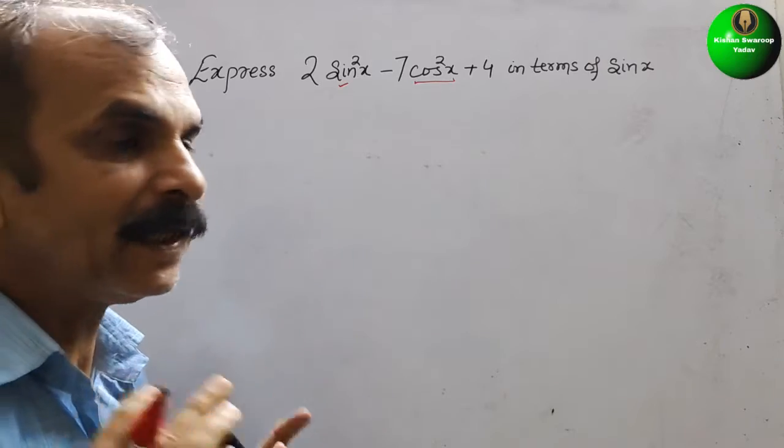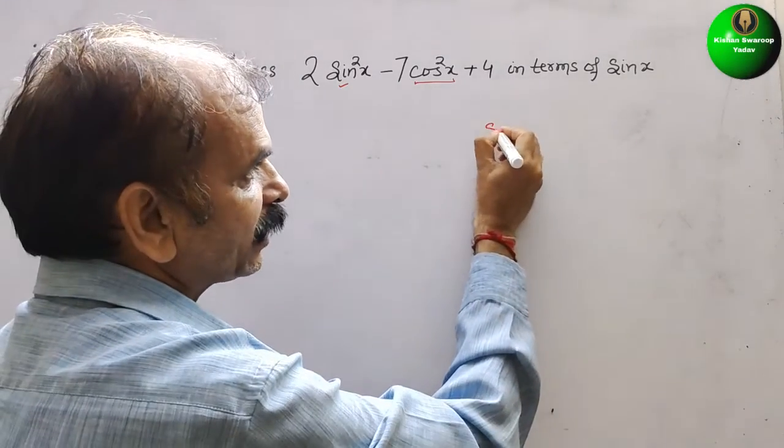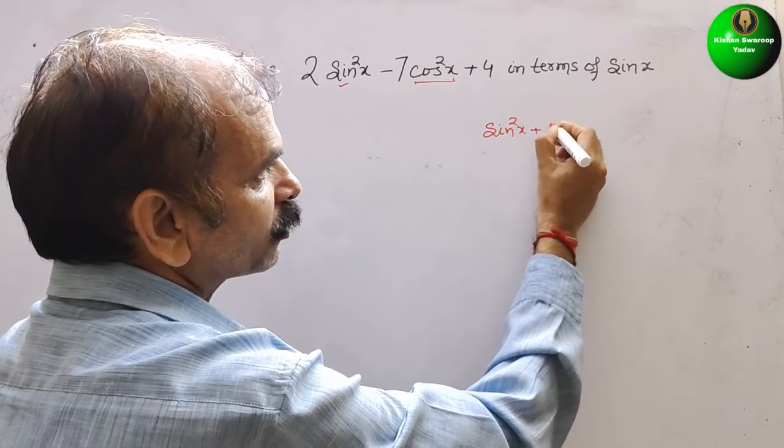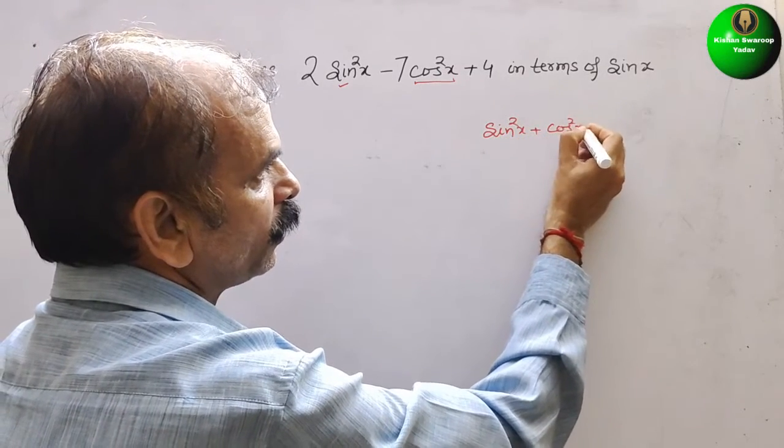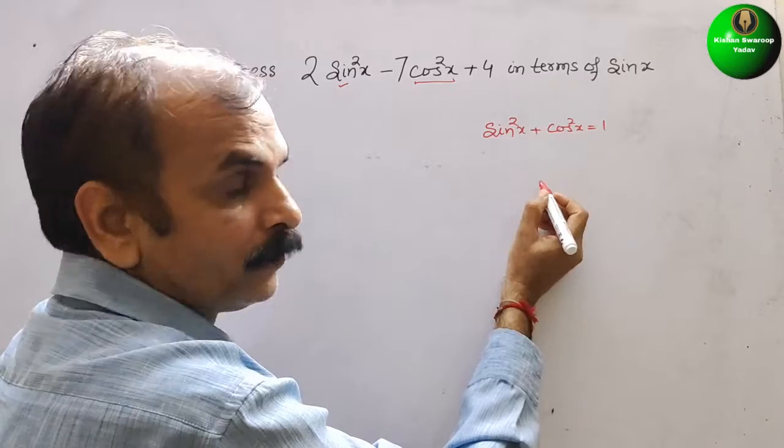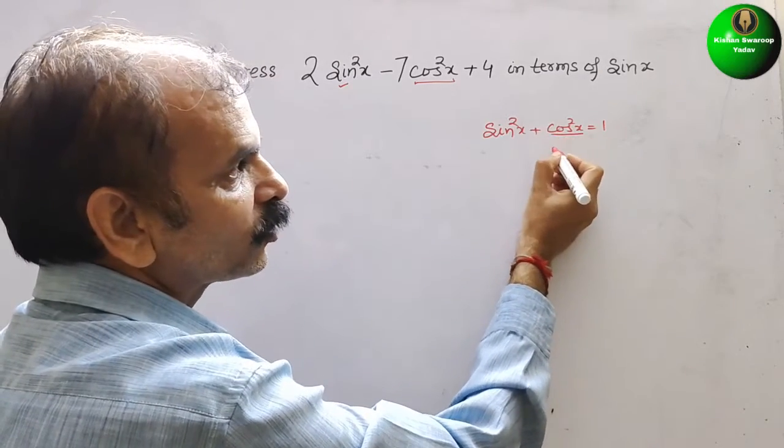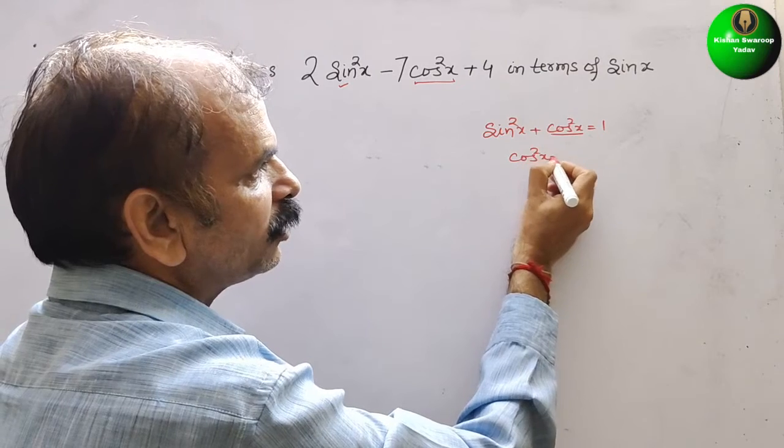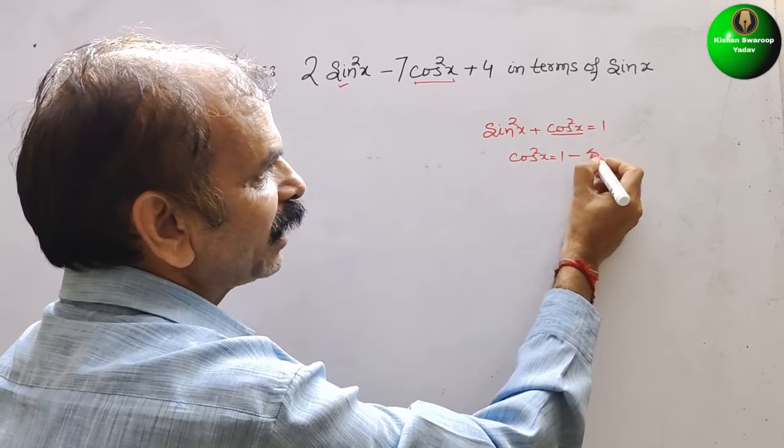How? One identity is there. That is nothing but sin square x plus cos square x is equal to 1. So they have given this, that means it will be cos square x is equal to 1 minus sin square x.